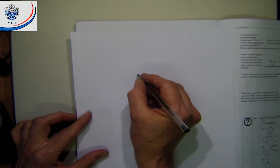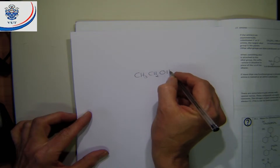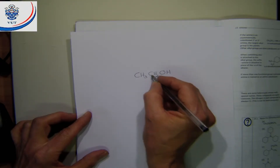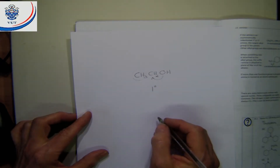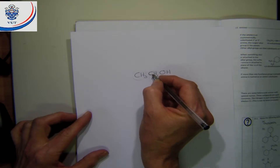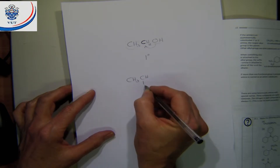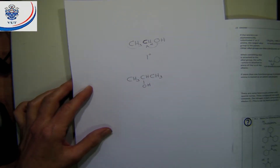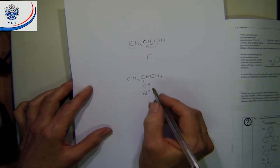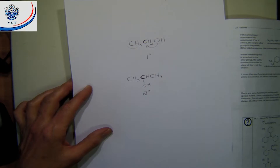If we pay attention to the alcohols again — in the alcohols, if we have a hydroxyl group bonded to a carbon bonded to one other carbon, we say we have a primary alcohol. So to classify alcohols, we have a look at the carbon to which the OH is bonded. For a secondary alcohol, we do the same thing.